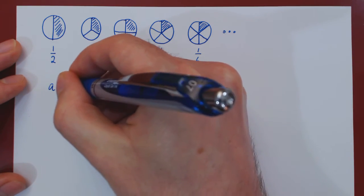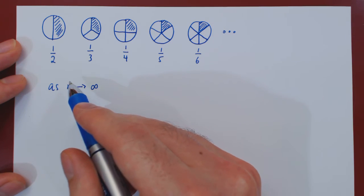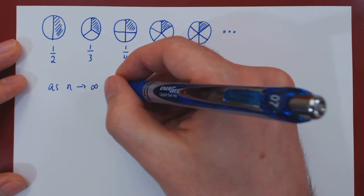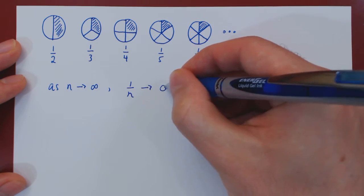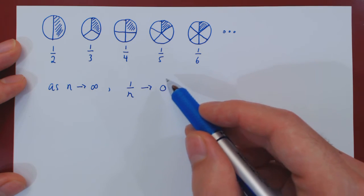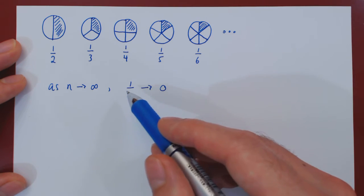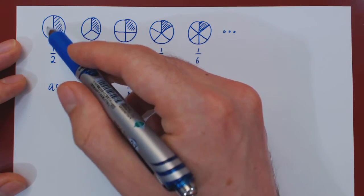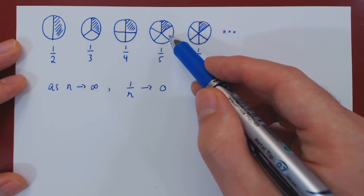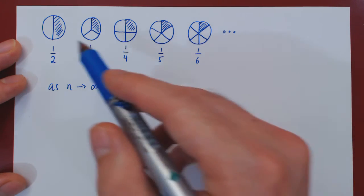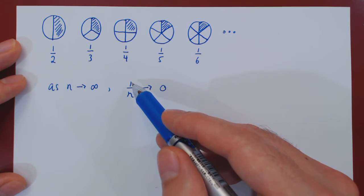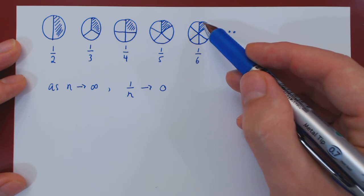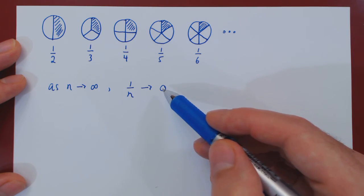I'm leading up to the following point: as n tends to infinity—and by that we mean as n, a positive integer, gets larger and larger without bounds—the reciprocal 1 over n will tend to zero. 1 over n will be getting smaller and smaller. As you divide your circle into a larger and larger number of parts, the parts are getting smaller and smaller. If you take one part out of a total of n parts, then the fraction of the whole circle you're taking is getting smaller and smaller.